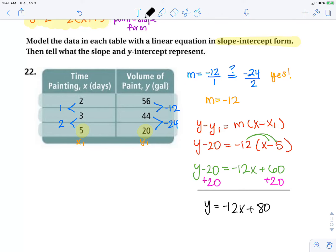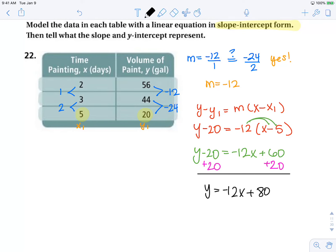So we can see that our slope is negative 12. And that is our rate of change. So the volume of the paint is decreasing by 12 gallons per day.